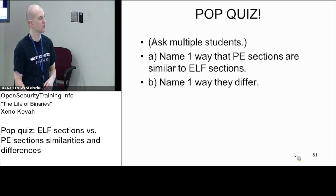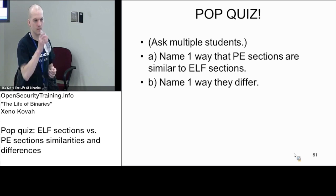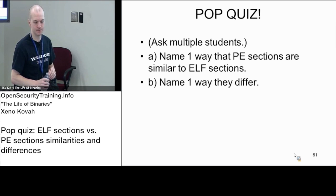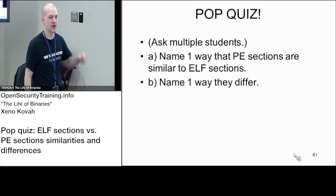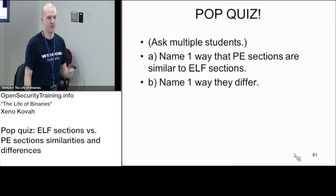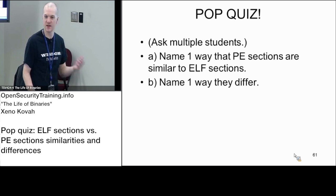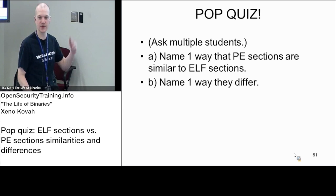Another way that's similar or different? So I was trying to map between these two. I think SH_addr is similar to virtual address. SH_addr is similar to the virtual address in the section header. And then continuing on with that thread, what's the other one that's similar? SH_offset would be similar to pointer to raw data. Exactly. SH_offset maps to pointer to raw data, so you've got a virtual address and a pointer to raw data.